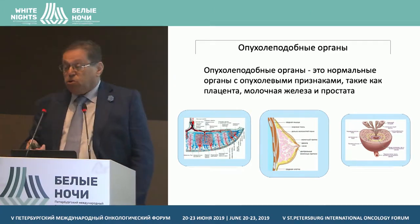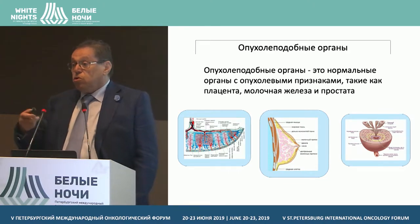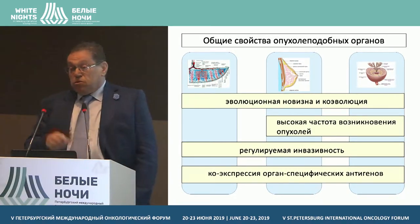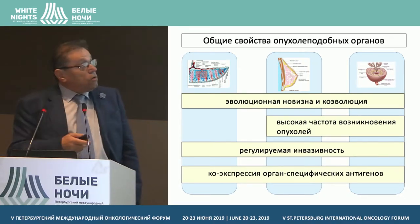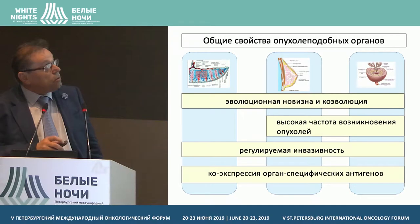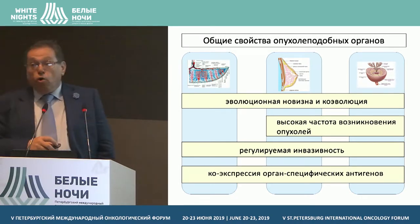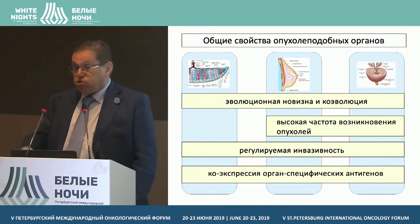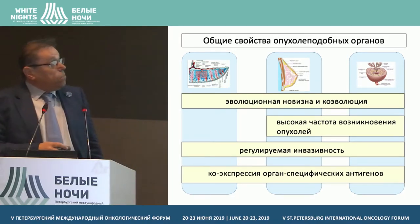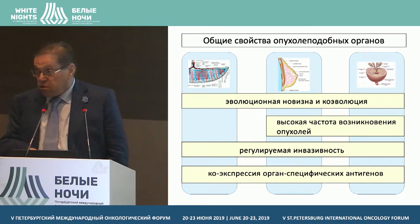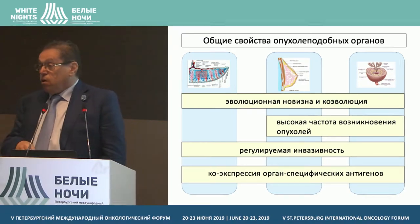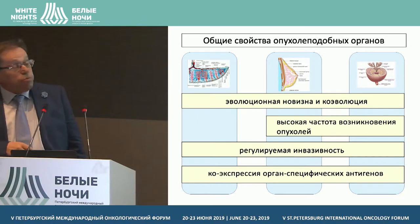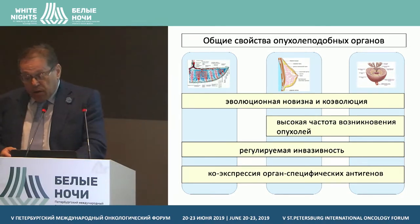On the other hand, there are tumor-like organs: placenta, breast, and prostate. These organs are very young. At least for breast and prostate, they have higher incidence of tumors — the majority of women die from breast cancer, the majority of men from prostate cancer. All of these tumors have a stage of regulated invasiveness, they co-evolve, and they have co-expression of organ-specific antigens. The system of organs is highly interconnected.